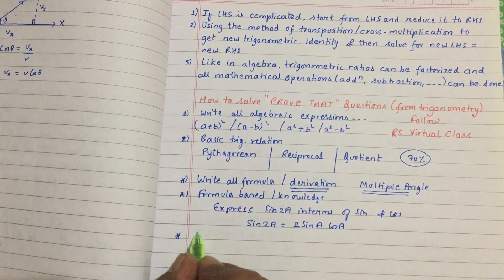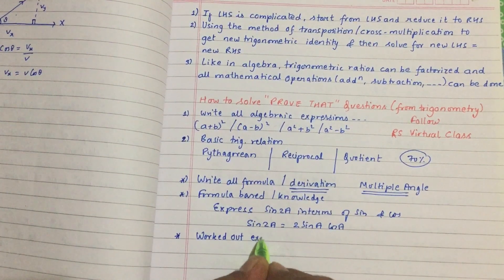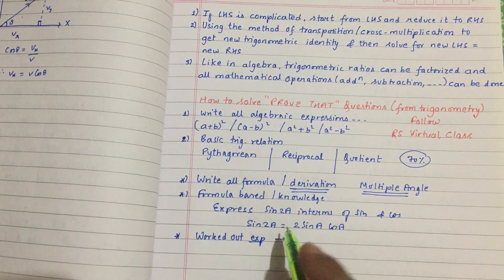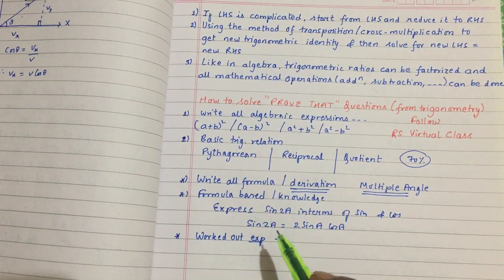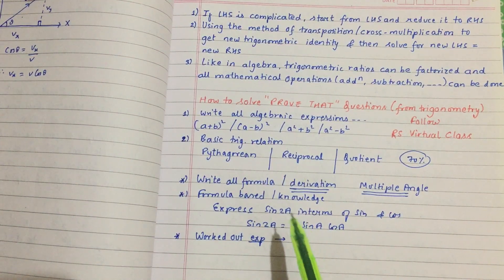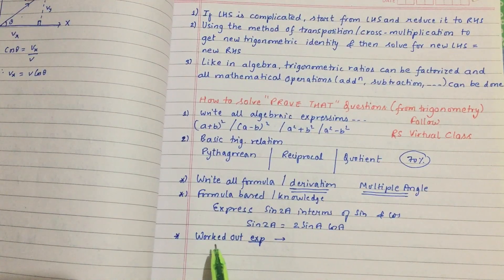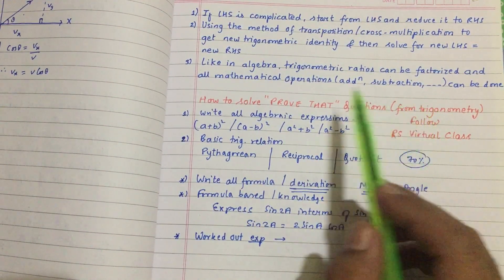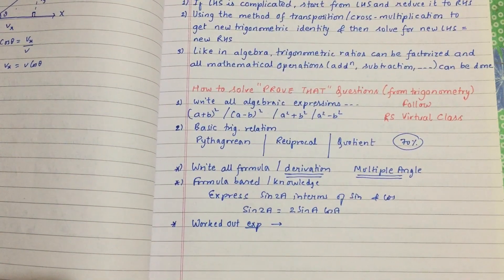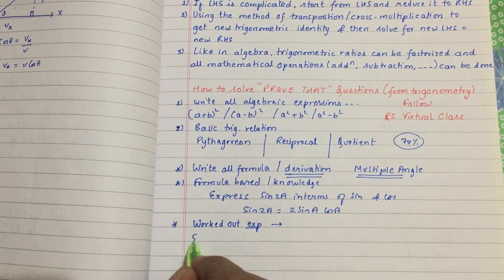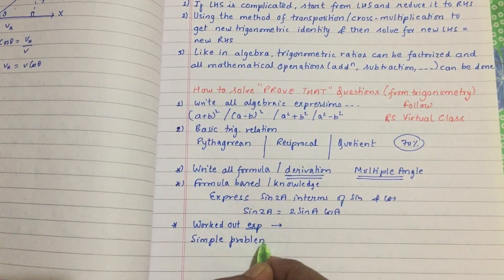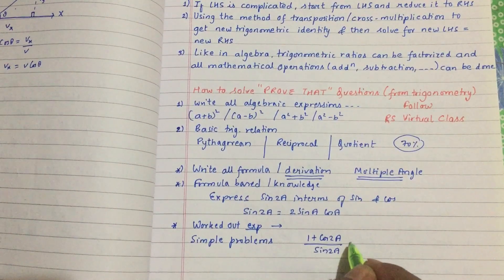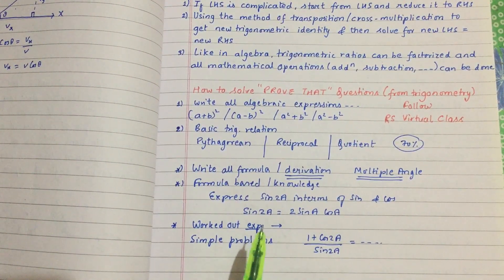Now you enter into workout examples. If you have to work with the book, you will learn workout examples. You will learn exercise problems. Unless you can solve workout examples, don't enter into exercise problems. If you have to do this workout example, you will learn how to do it. Simple problems you can do in a given situation. You will learn the formula.